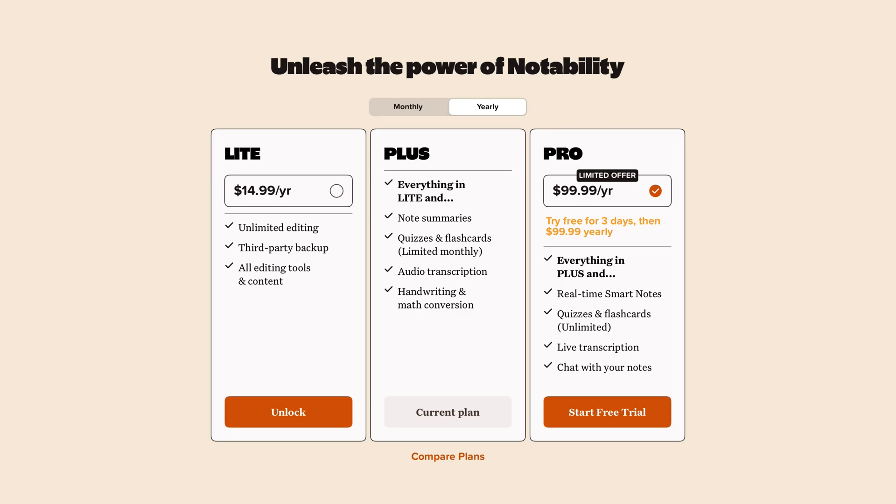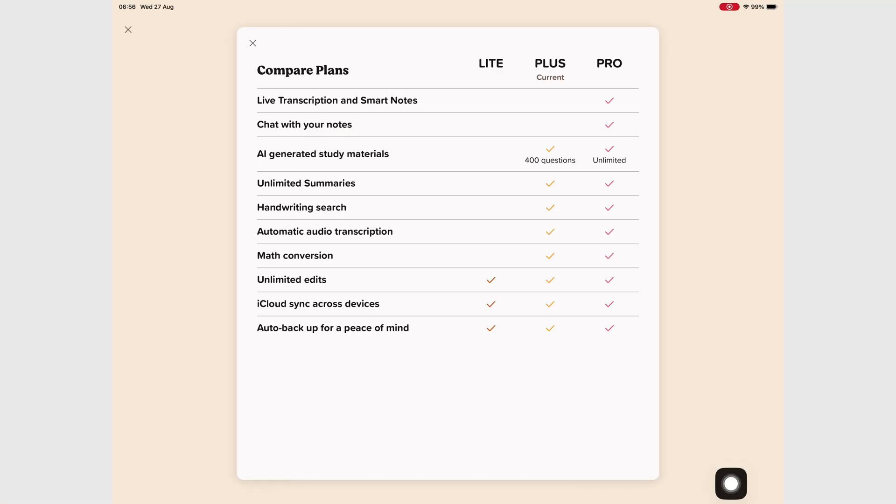Notability 15 has, without doubt, the worst pricing setup for a handwriting note-taking app in 2025. The Pro Plan costs $100 a year, or a painful $20 a month. I'm on the Plus Plan, which is $20 a year. This used to be $15, but they bumped it up. Now the Pro Plan gives you smart notes, real-time transcription, and chat. But honestly, those features haven't been game-changing in other handwriting note-taking apps, so I'm not really eager to spend $20 a month to try them.